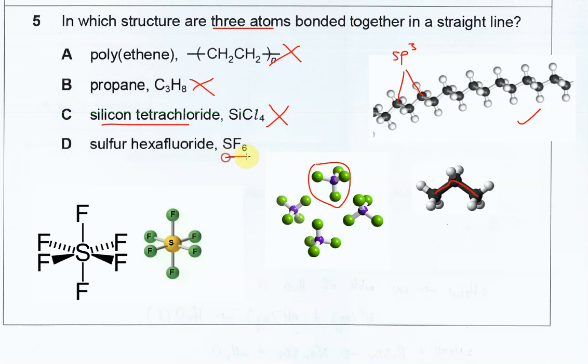Okay, so for SF6, because we know that it's an octahedral geometry and the fluorine, sulfur and fluorine, they can be in a straight line. And this one also can be a straight line, this one also can be.